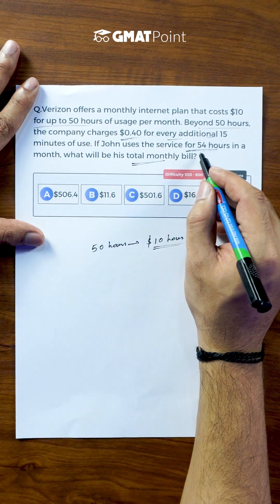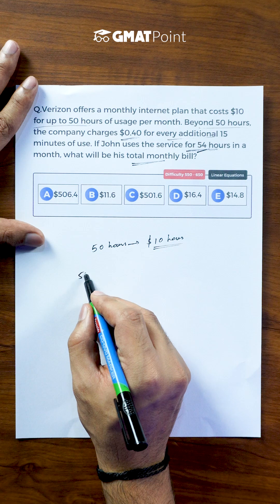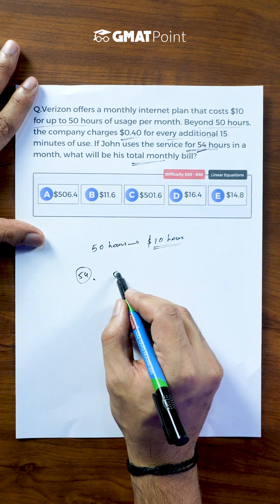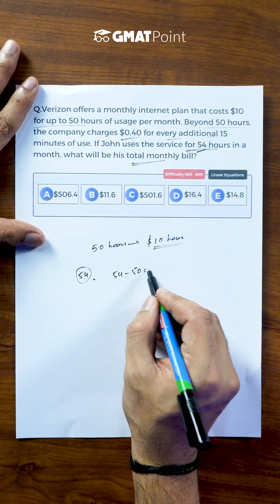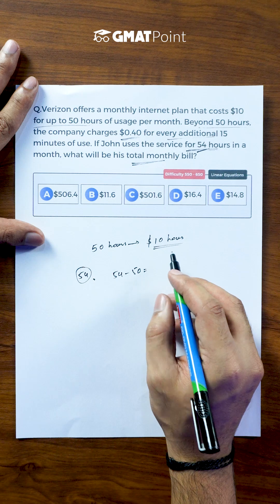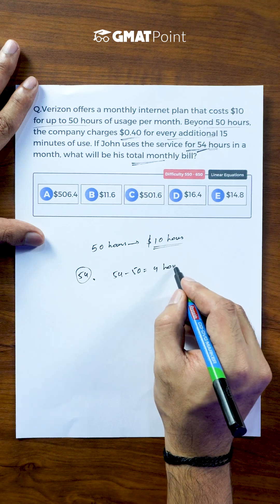Now we are told that John uses the service for 54 hours. So the extra number of hours that John used can be calculated as 54 minus 50, which is 4 hours.